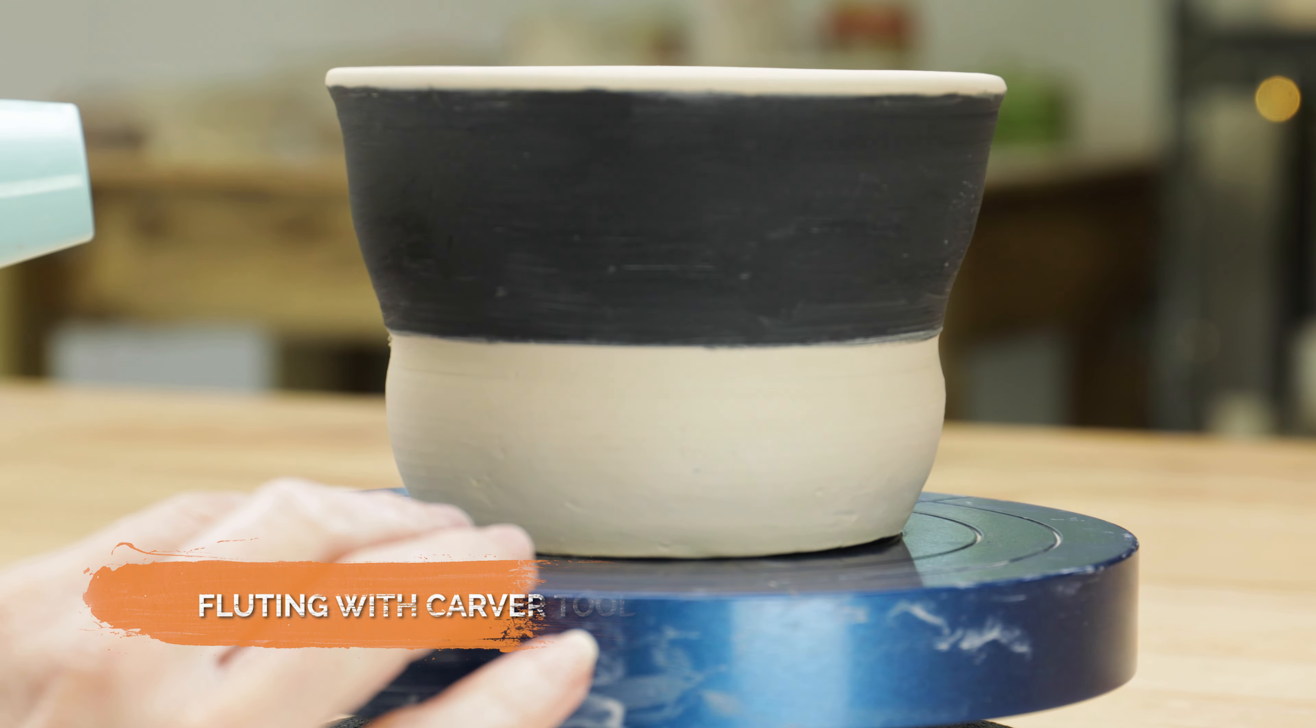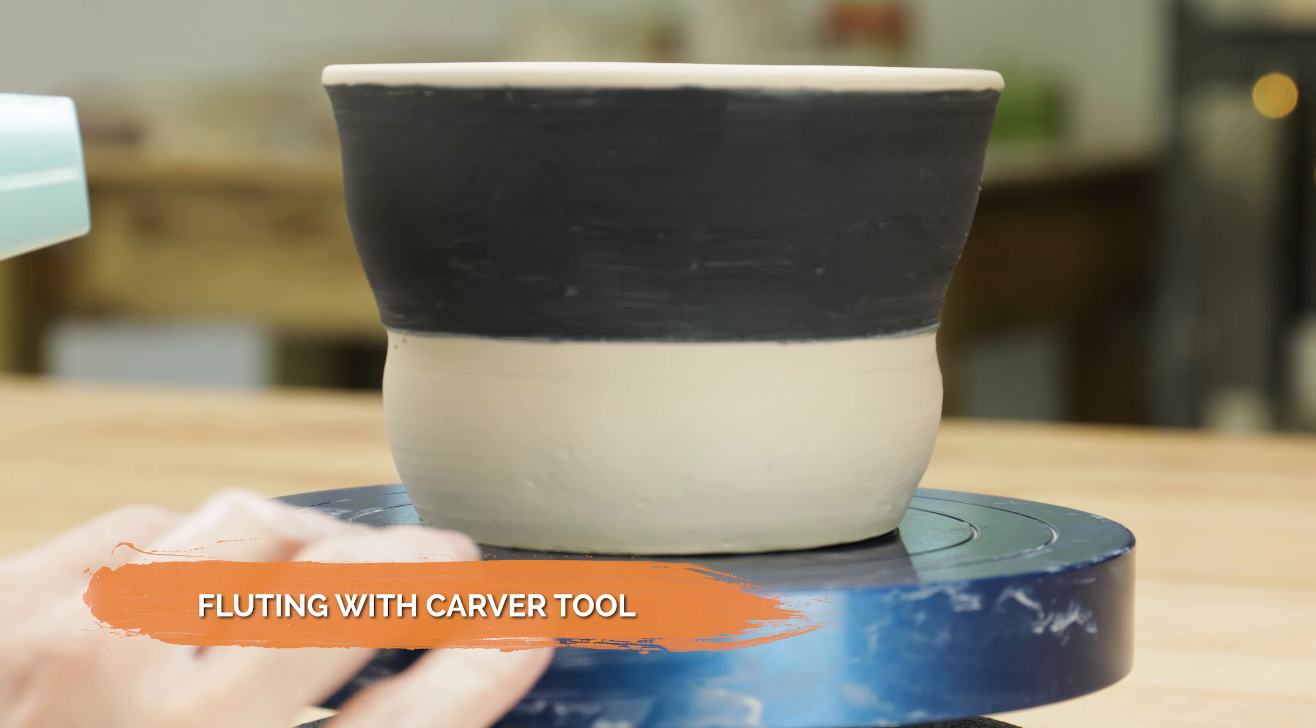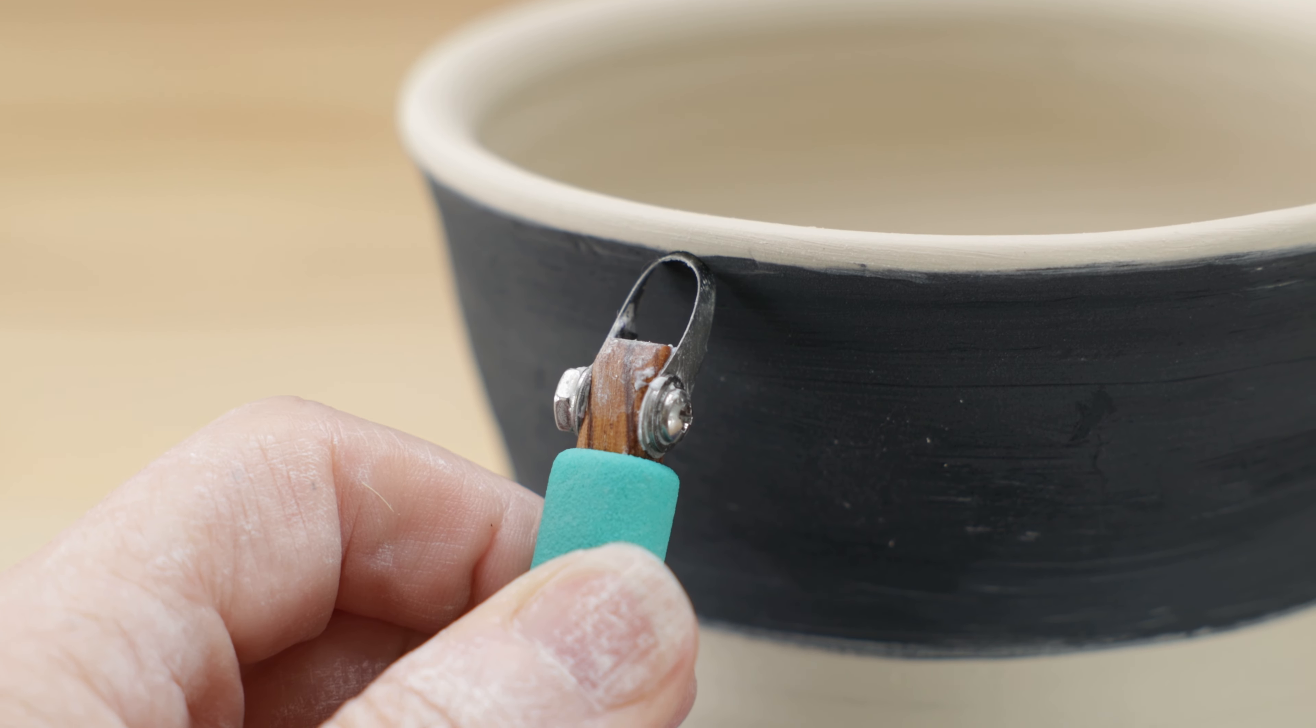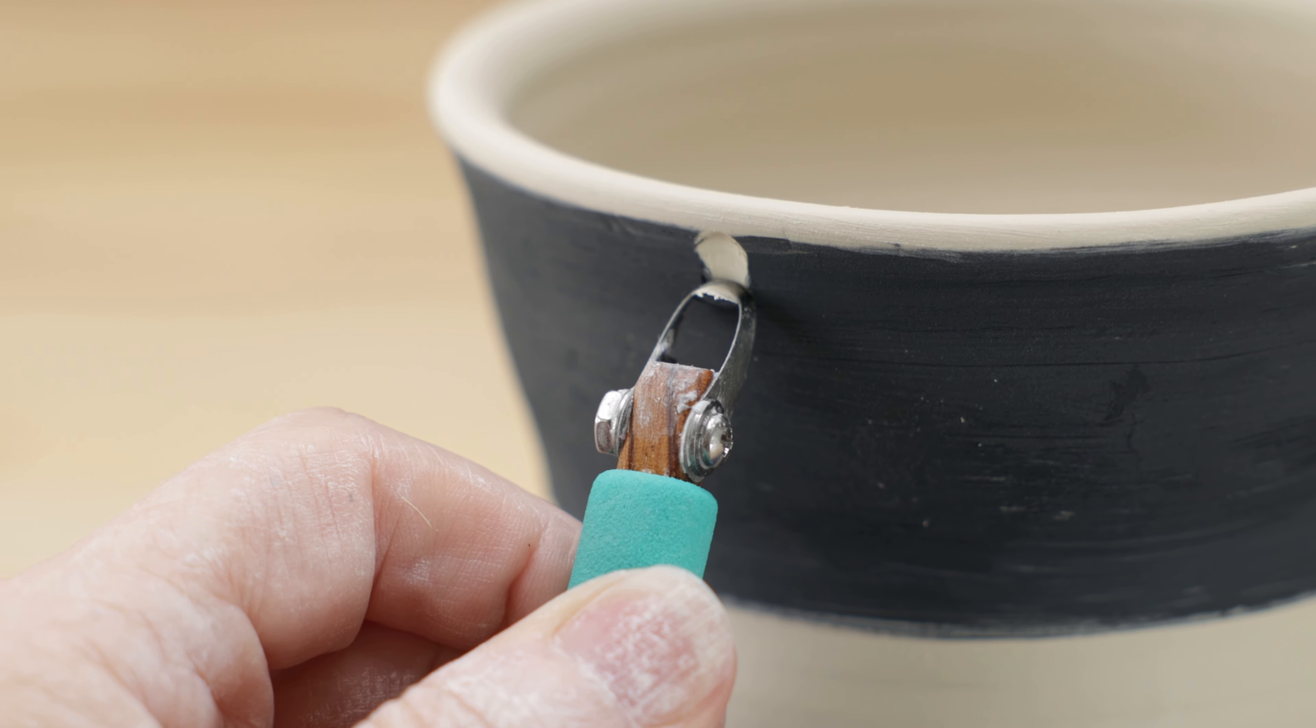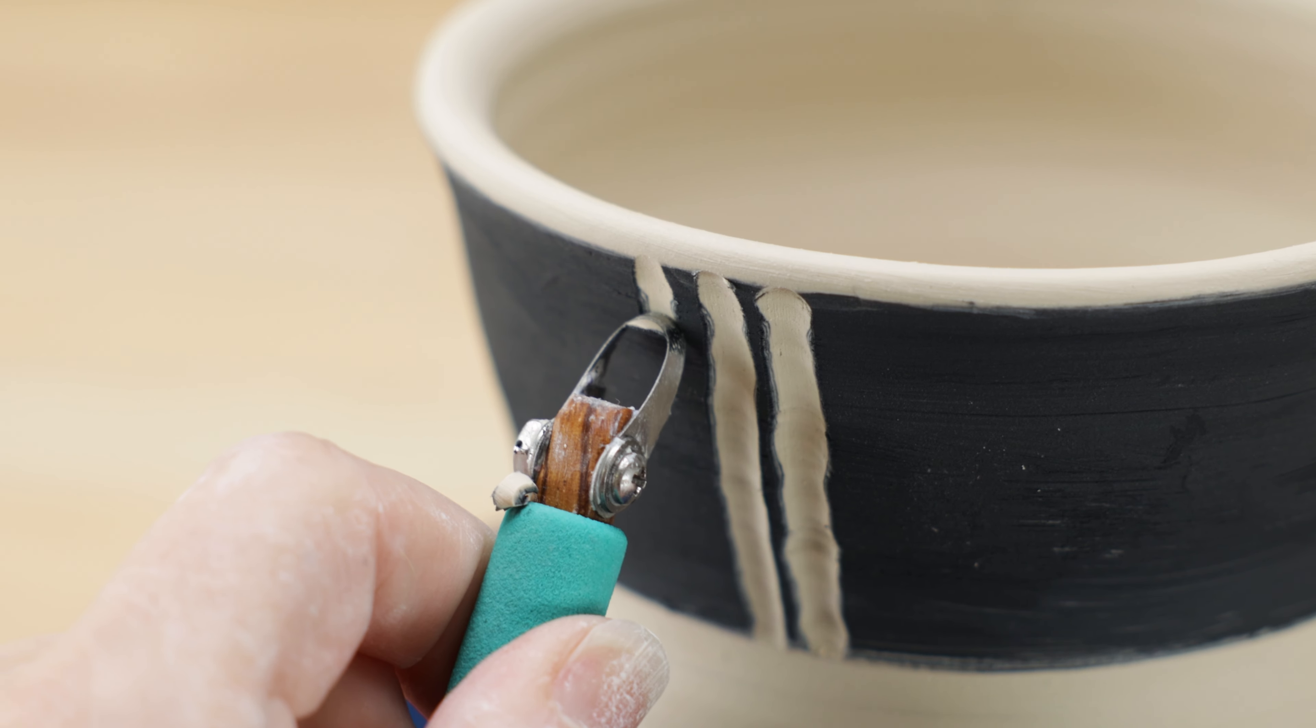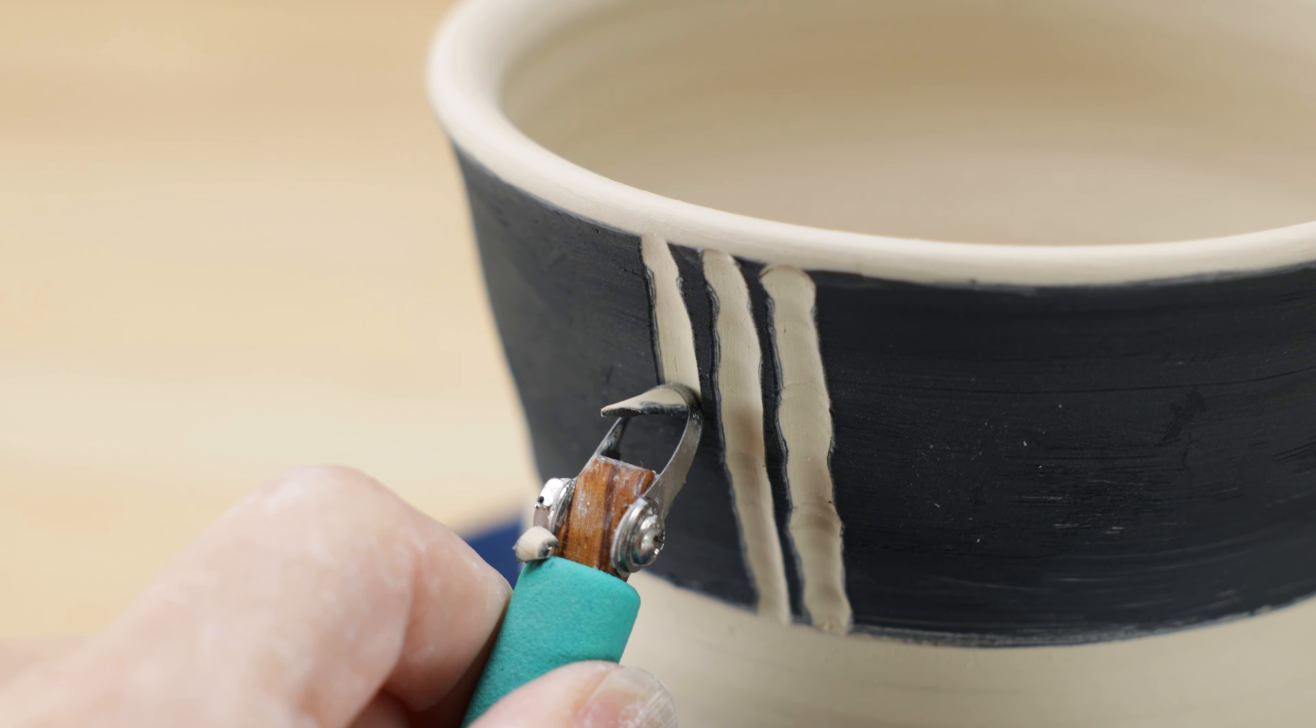You can also create flutes to the outside of your pieces with carving tools. I threw this bowl previously. When it stiffened to leather hard, I layered it with solid layers of black underglaze and white slip. This time I'm using this rounded cutter to make flutes side by side so you can see the black lines in between each cut.